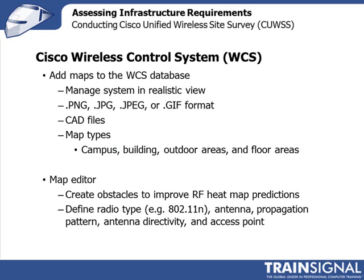For our site survey, we want to add some maps and place our access points. You can add maps in different formats — there are four formats available. When you bring in your maps, you'll define what type they are: is this a campus? A campus would consist of multiple buildings, so you can bring in a campus map and add buildings and outdoor areas to it. Then if you've got a building, you can add floor areas within the building. You can literally build a portfolio of maps, which can be used both in the site survey report and for ongoing management of your wireless system once deployed.